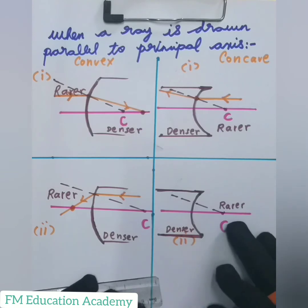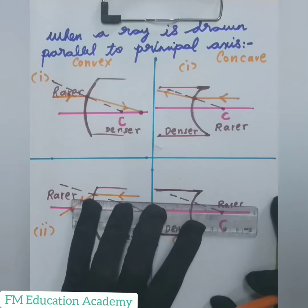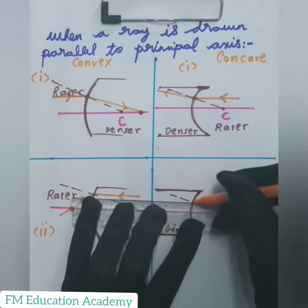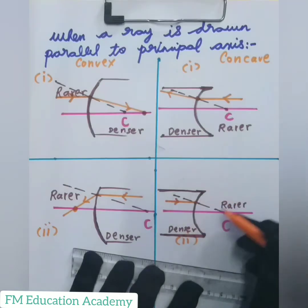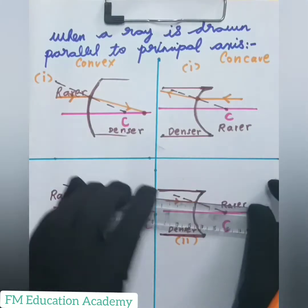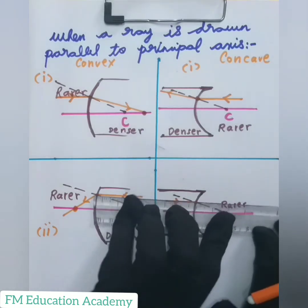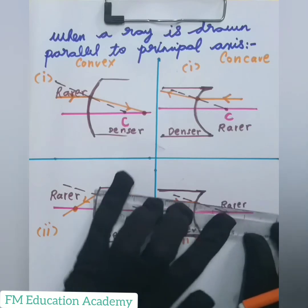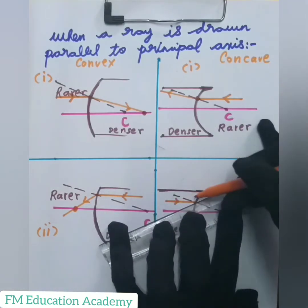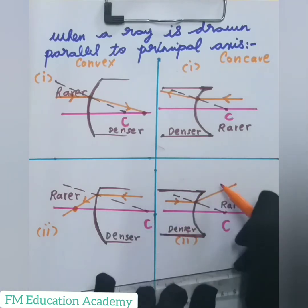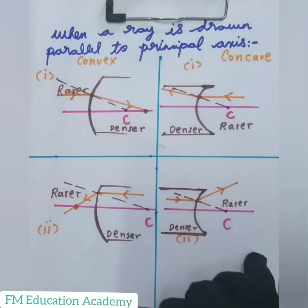Let us see what happens when a ray travels from denser to rarer medium and is parallel to the principal axis for a concave surface. The ray is coming in this direction, hitting the concave surface, and since it is traveling from denser to rarer medium, it should bend away from the normal. So if this is my normal, the ray bends away like this. These were the four cases of concave and convex.